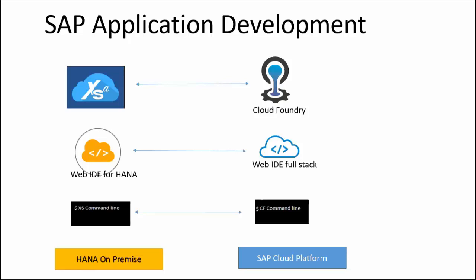And of course, we're going to use GitHub for both on-premise as well as cloud environments for source control. That's about the comparison of on-premise and cloud in terms of application development. Since we've already covered XS Advanced application development in previous videos, I'm going to focus on Cloud Foundry and WebIDE for full stack command line tools in this current video.